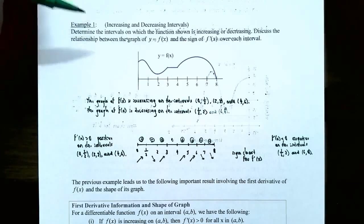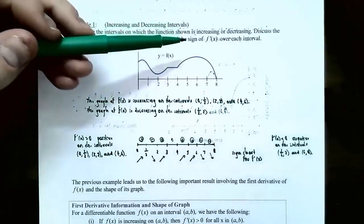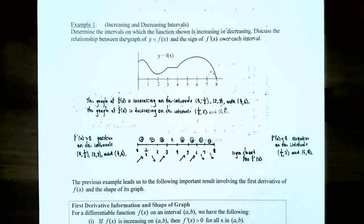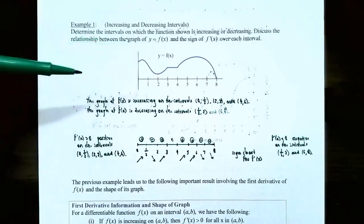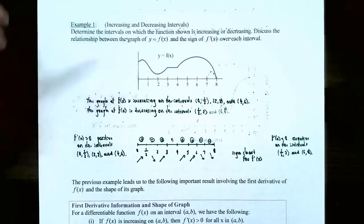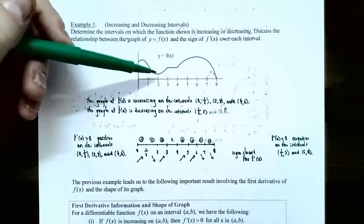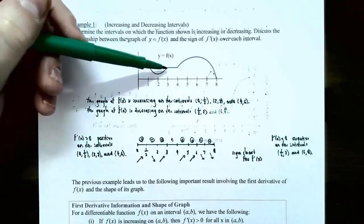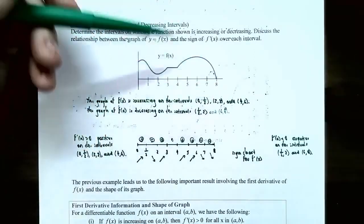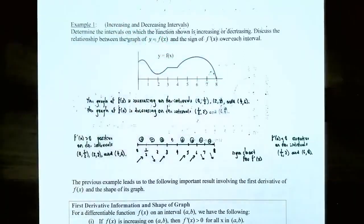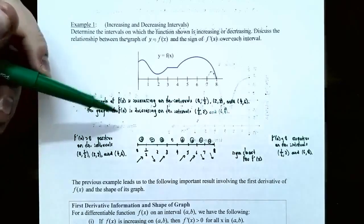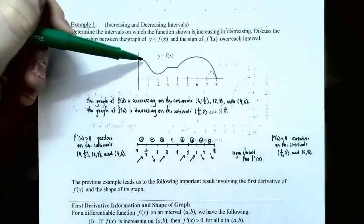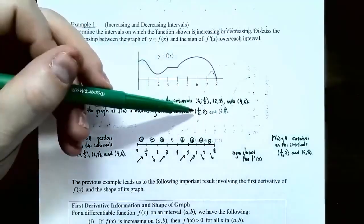Example 1: Increasing and decreasing intervals. Determine the intervals on which the function shown is increasing or decreasing. The graph is increasing on the open intervals (0, 1/2), (2, 3), and (4, 6). It's decreasing from x = 1/2 to x = 2, so the open interval (1/2, 2), and also decreasing from x = 6 to x = 8, so the open interval (6, 8).